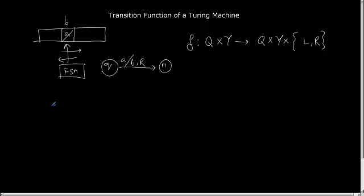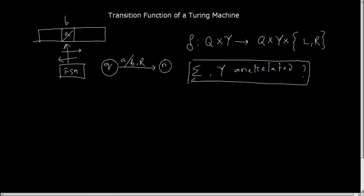How are the input alphabet sigma and the tape alphabet gamma related? Because the tape contains first the input string, and that input string is constructed from the input alphabet set sigma. So I can say that sigma is a subset of gamma.